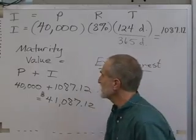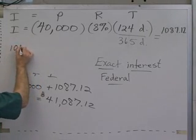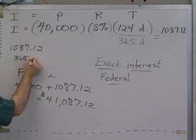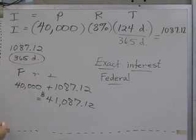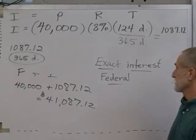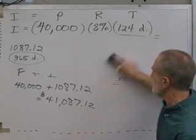Now, let's remember that interest amount. That interest amount was $1,087.12 on a 365-day basis. Now, that's not the way everybody does it, though. Almost everybody does it with what's called ordinary interest.